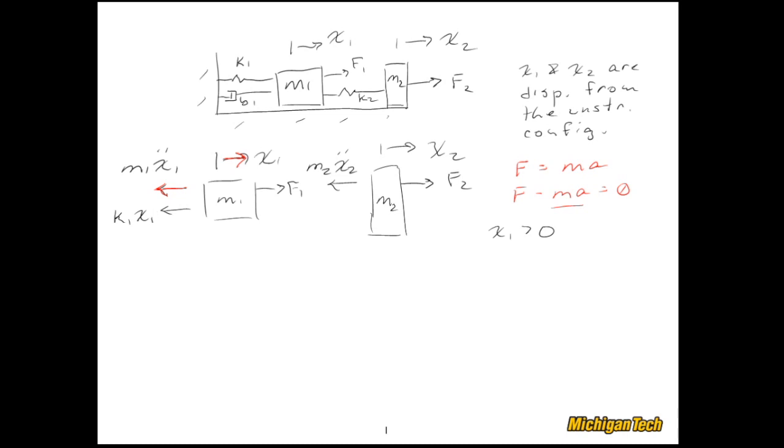Similarly, if the mass was having a positive speed to the right, then there would be a force pulling back on it to the tune of B1 X1 dot. Okay, now let's get the force due to this spring, K2.